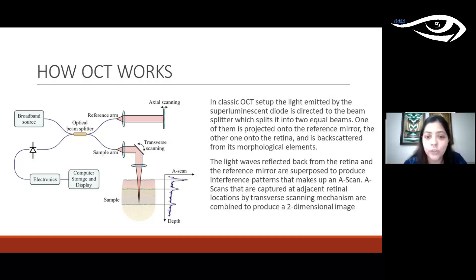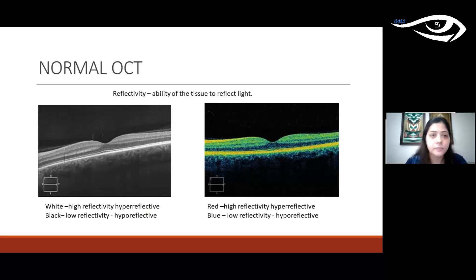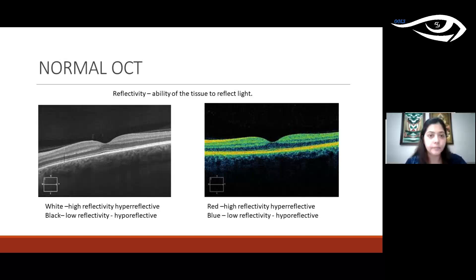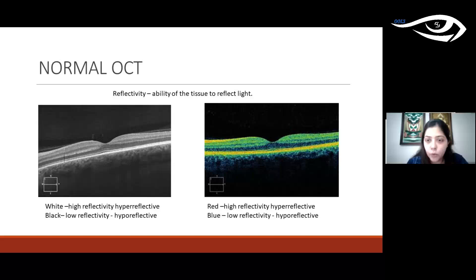A-scans are captured at adjacent retinal locations and combined to give a B-scan. On a normal OCT, the dark area above corresponds to the vitreous, the alternate black and white lines constitute the retina, and below is the choroid. White areas are called hyper-reflective because they have high reflectivity; darker areas have lower reflectivity. In a color image, blue corresponds to lower reflectivity and red to higher reflectivity.